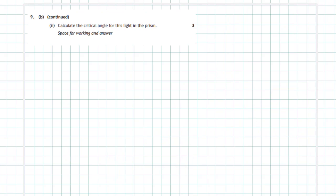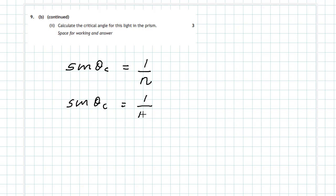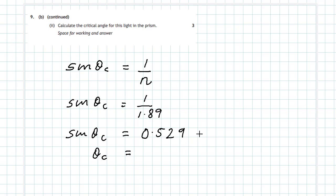Question 9b Part 2: Calculate the critical angle for this light in the prism. From our data book, the critical angle can be found from: sin(theta critical) equals 1 divided by the refractive index of the material. So sin(theta critical) equals 1 divided by 1.89. Do that in your calculator and you get 0.529. Make sure your calculator is on degrees, take the inverse sine, and theta critical comes out to be 32 degrees to the nearest degree.